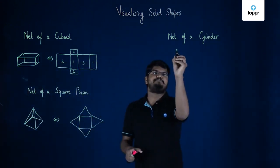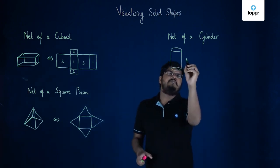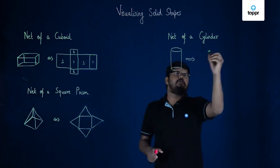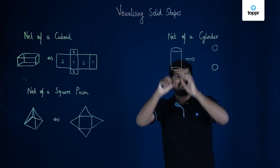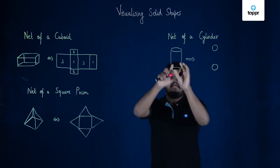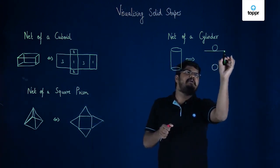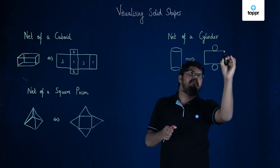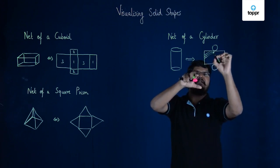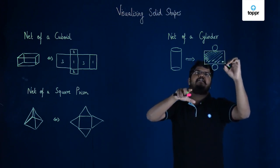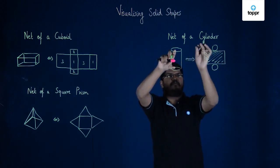Next is a cylinder. To draw the net of a cylinder, you will first have to draw two circles — the top and bottom will be circles. In between these circles you have a curved surface, and we know that if we cut this curved surface it will unfold into a flat sheet of paper, making it a rectangle. This rectangle represents the curved surface of the figure, and the two circles denote the top and bottom of the cylinder.